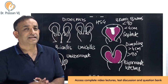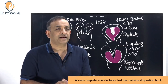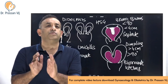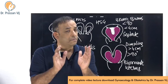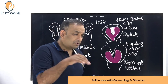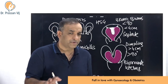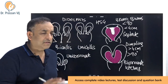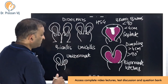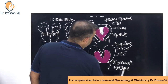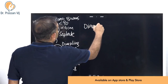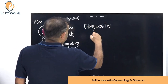The septate uterus is the single most common Müllerian defect. The best way to know the difference between septate and bicornuate is by diagnostic laparoscopy plus hysteroscopy in the same sitting under general anesthesia.